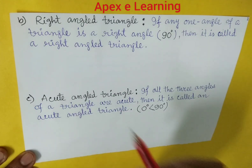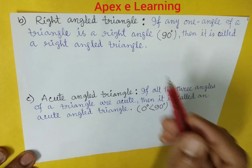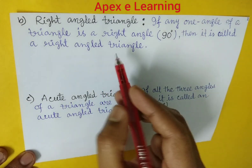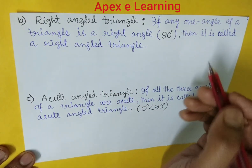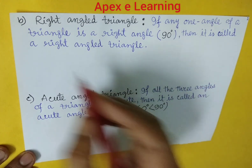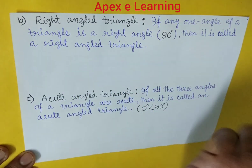Next is right angle triangle. If any one angle of a triangle is a right angle, or 90 degrees, then that is called a right angle triangle. In Bengali, that is called Somokoni Tribhuj.